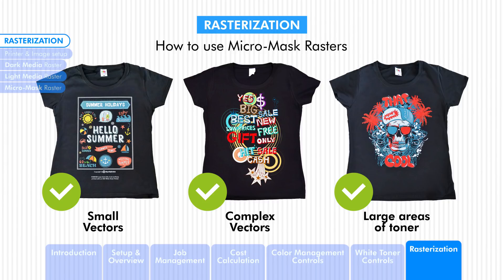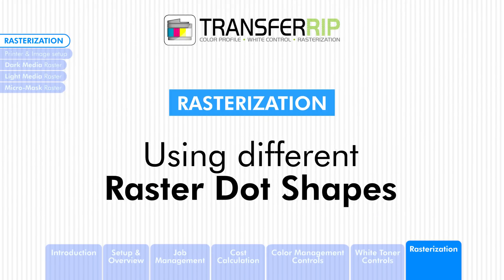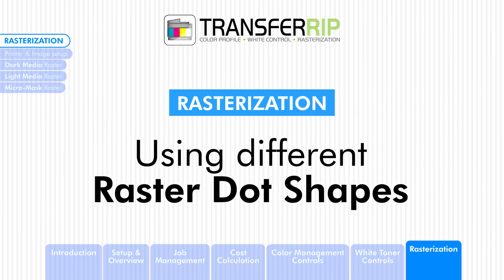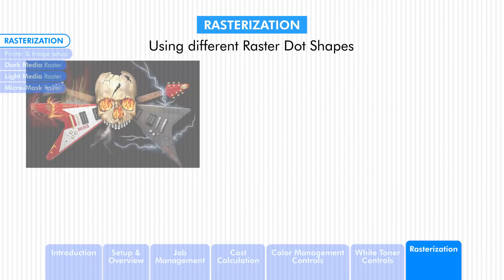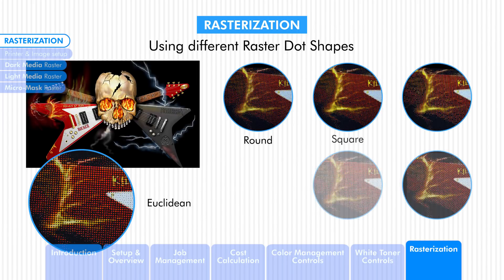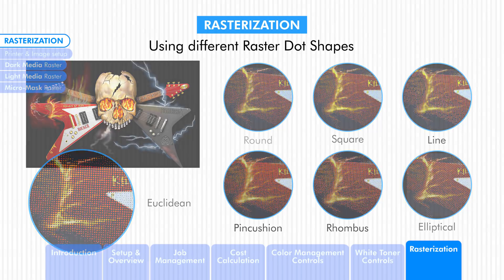Each raster option can be customized to work with your garment to avoid cracking, make the design more washable, softer, or simply to create a unique look. You can choose from seven different raster dot shapes, each looking different and providing a unique look to your design. The dot shapes available are: Euclidean, round, square, line, pincushion, rhombus, and elliptical.